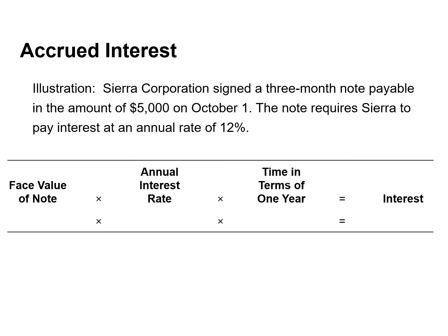Sierra signed a three-month note payable in the amount of $5,000 on October 1st. The note requires Sierra to pay interest at an annual rate of 12%. The amount of interest recorded is determined by three factors: the face value of the note (also referred to as principal), the interest rate (always expressed as an annual rate), and the length of time the note is outstanding. The formula for calculating interest is the face value of the note multiplied by the annual interest rate, then multiplied by time expressed as a fraction of one year.